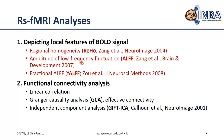There are at least two main approaches. The first is called Regional Homogeneity — we calculate regional similarity between neighboring voxels using the resting state fMRI data. In short, we call this ReHo. This was developed in 2004 and published in NeuroImage, which is an important journal in the neuroimaging field.